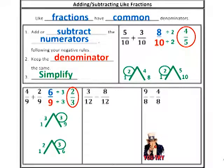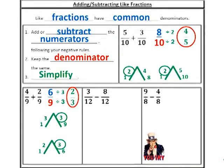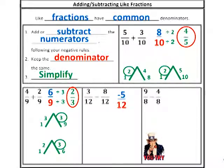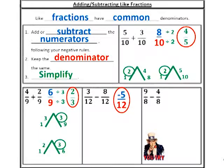Next problem — again, I see common denominators, so I have like fractions. That means I can jump straight to adding or subtracting my numerator. Three minus eight. Use your calculator or keep those negative rules in mind. I have three dollars, I owe someone eight — I am five dollars in debt, or negative five. My denominator stays exactly the same. That's the best part about common denominators: you don't have to worry about turning them into a new denominator. You can just add or subtract, and the denominator is already right in front of you. You could try to simplify, but five and twelve do not have any common factors — it's already in simplest form.